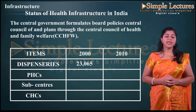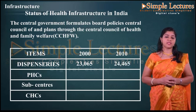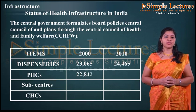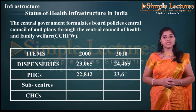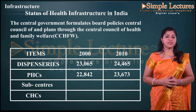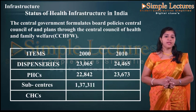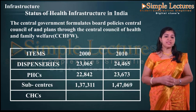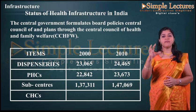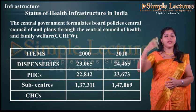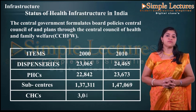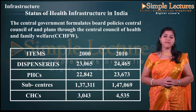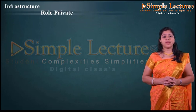Primary health centres were 22,042 in 2000 and increased to 23,673 in 2010. Sub-centres were 1,37,311 in 2000 and increased to 1,47,069 in 2010. Central health centres — which serve 2 to 3 villages each — were 3,043 in 2000 and increased to 4,535 in 2010.